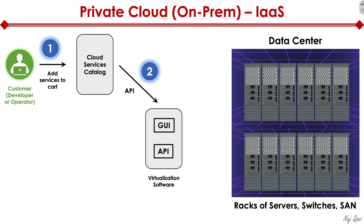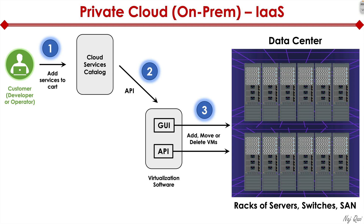When they do that, through the magic of API — application programming interface — that request gets translated into the virtualization software through an API. And ultimately, the resources get provisioned within the data center automatically.